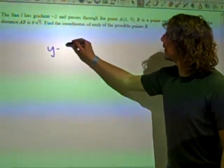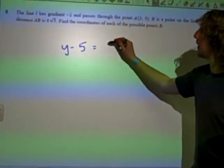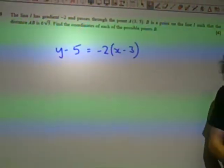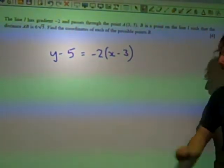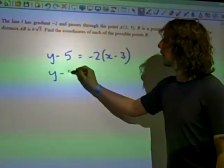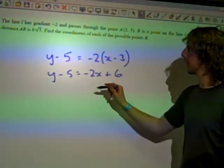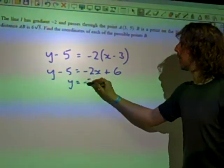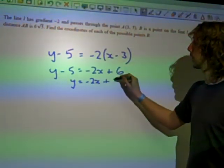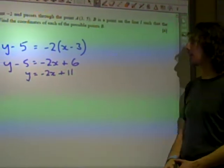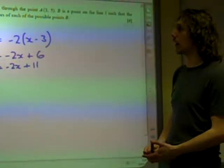We're going to say we've got y minus y₁ is m times x minus x₁. So the equation of the line y minus 5 is minus 2x plus 6. So y equals minus 2x plus 11. And that is a start point. That is the equation of the line L.